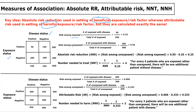Then we're going to calculate the risk among the unexposed, which will be the number of unexposed with disease divided by the total number of unexposed, which gives us 200 over 400, or 0.5. In this case, we can see the risk among the exposed is lower than the risk among the unexposed. Therefore, we know that this exposure or risk factor is beneficial, so we'll be dealing with an absolute risk reduction. To calculate the absolute risk reduction, you take the risk among the unexposed and subtract the risk among the exposed — so 0.5 minus 0.25 — giving us an absolute risk reduction of 0.25.